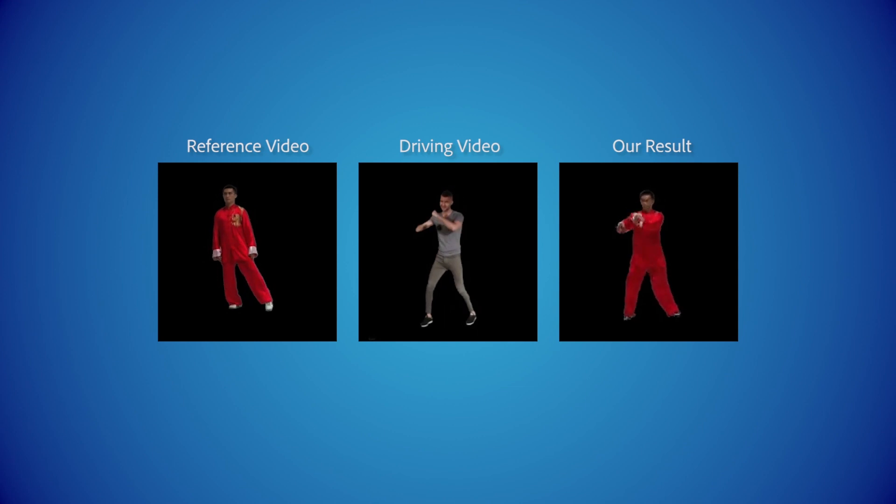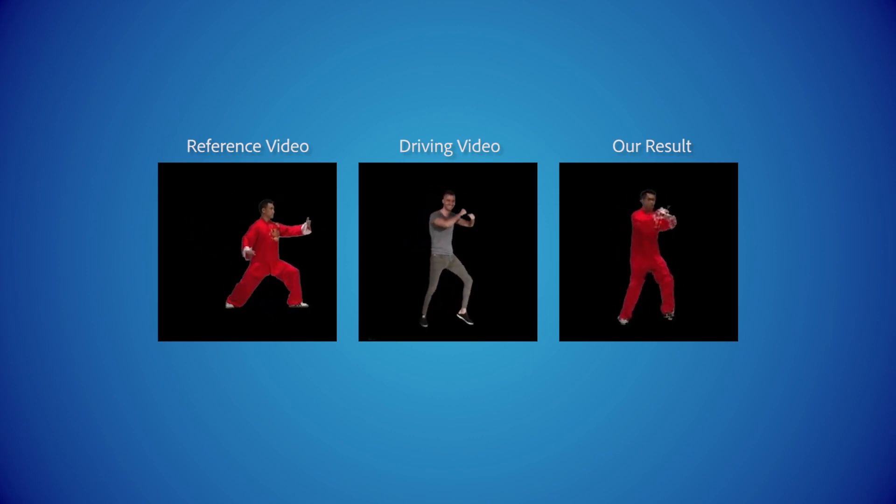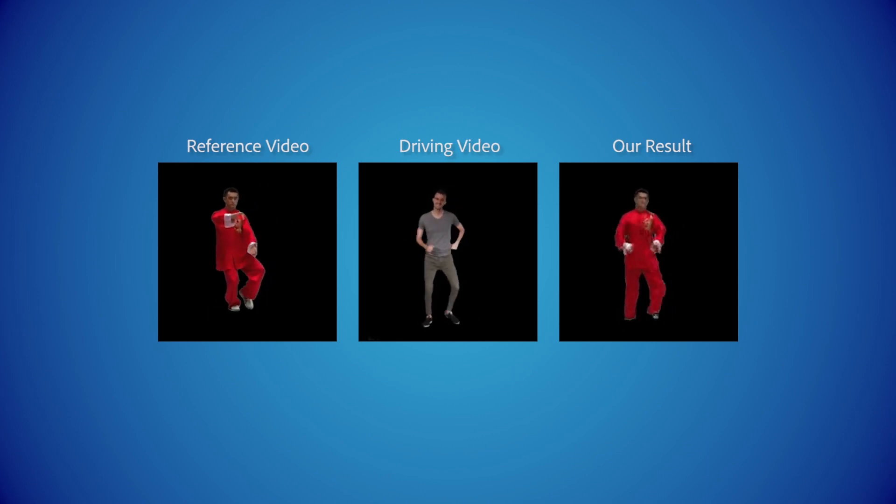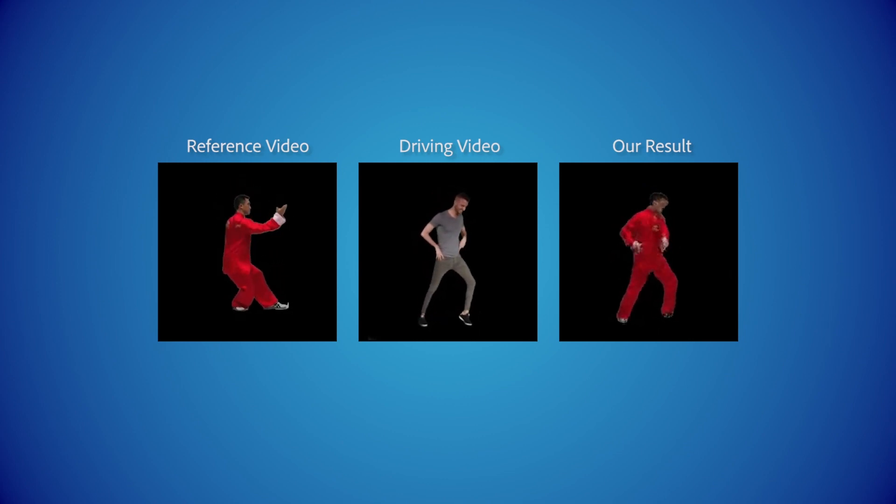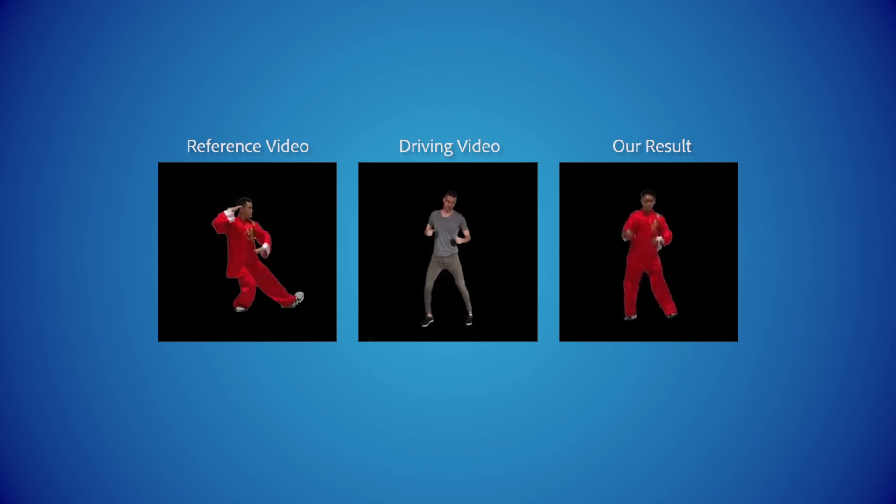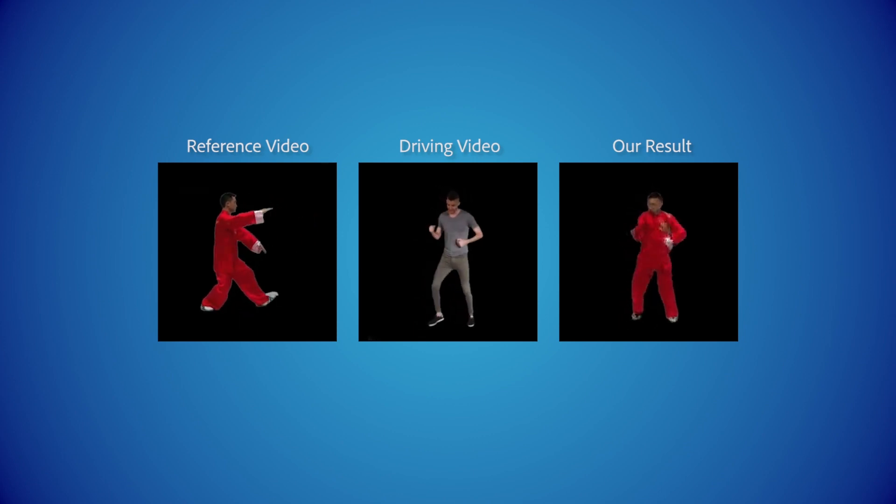Since we represent poses only by using joint positions, finer details such as hands, clothes, shoes and face are generated by the network based only on the connections between pose and appearance that have been spotted during the training on the paired data. Here we can see that the resulting video has some artifacts and the network struggles to generate finer details. However, our method still managed to drastically modify the motion of the target actor.